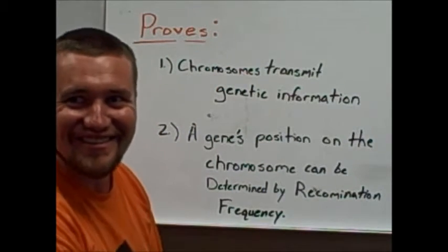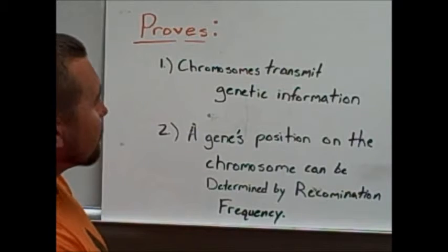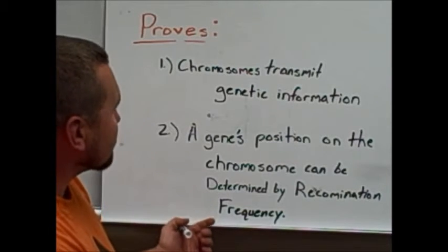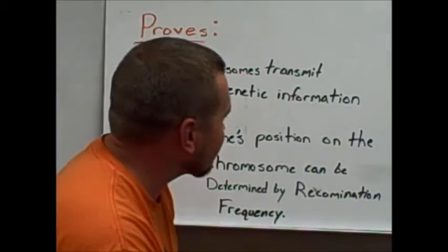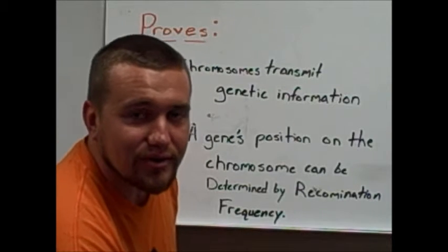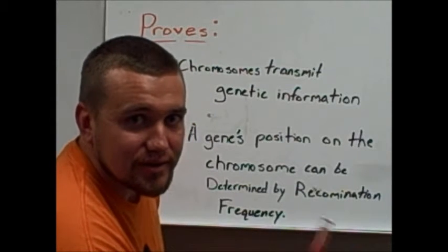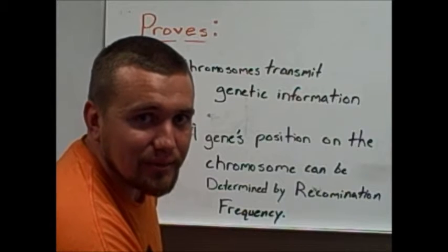What does this prove? What happened? It proves that chromosomes are the transmitters of genetic information. And it also shows us how we can determine the location of a gene just by doing these recombination rates.